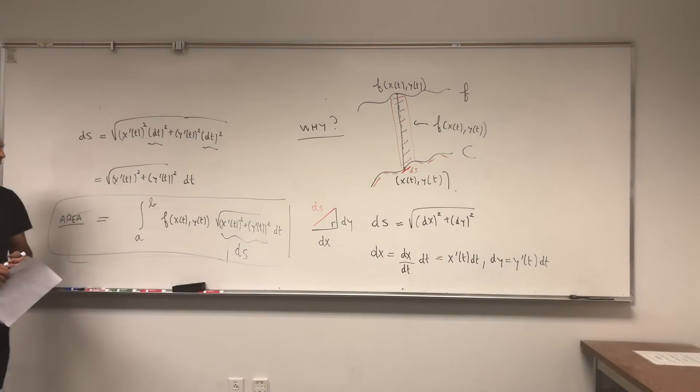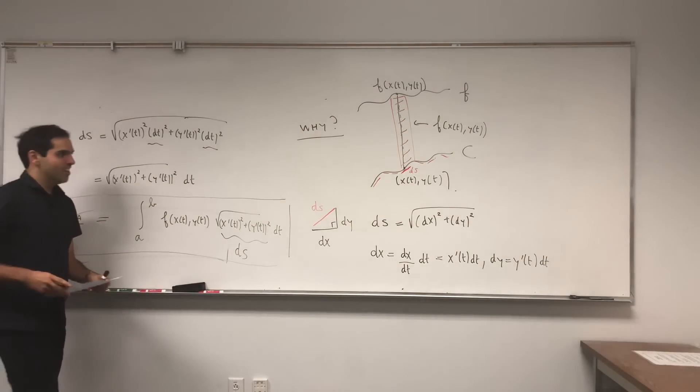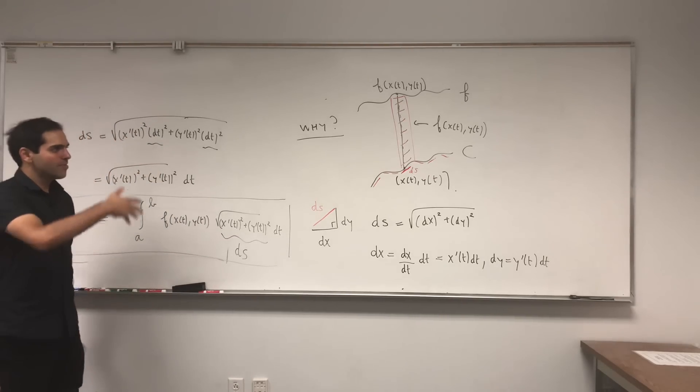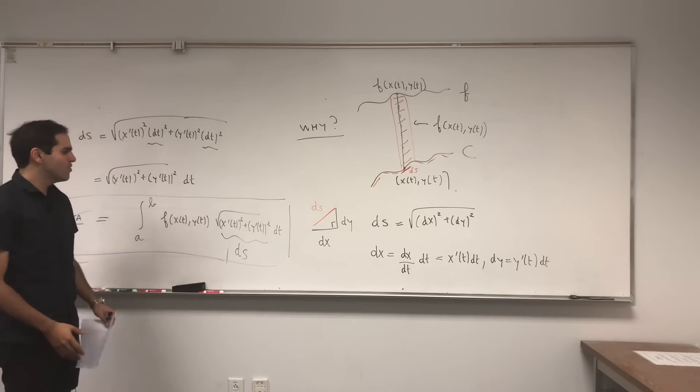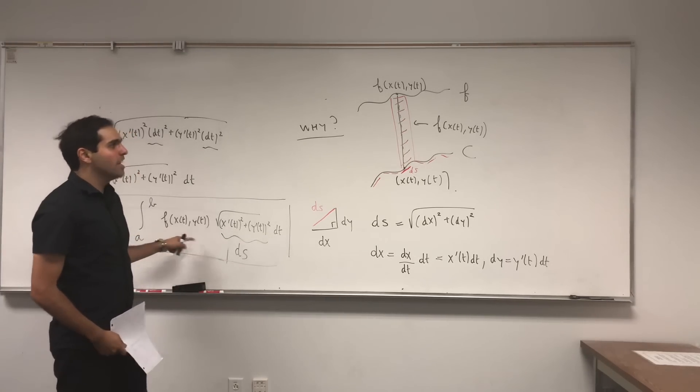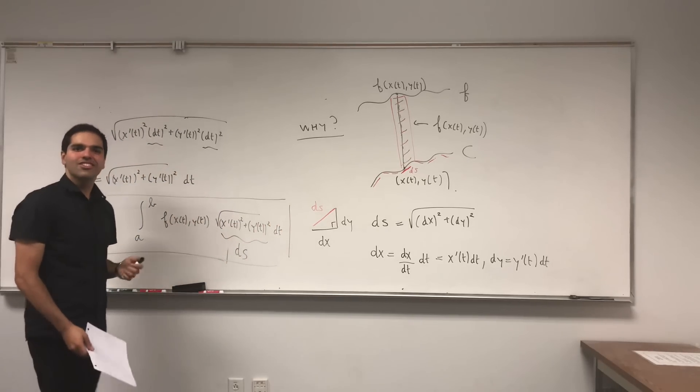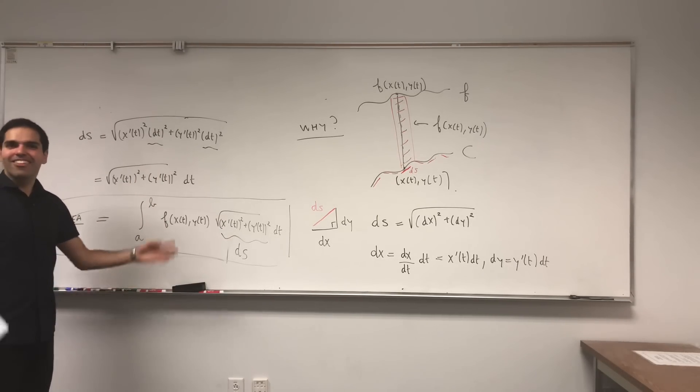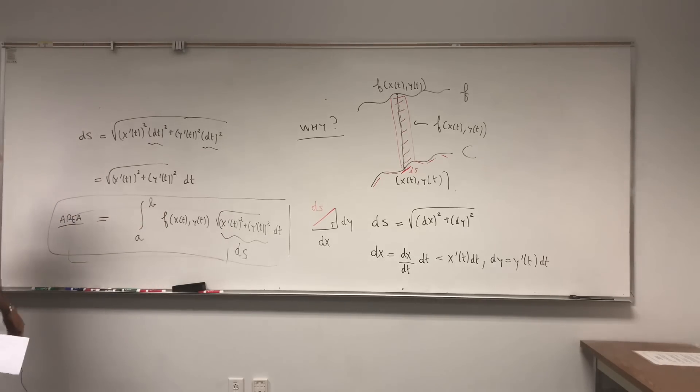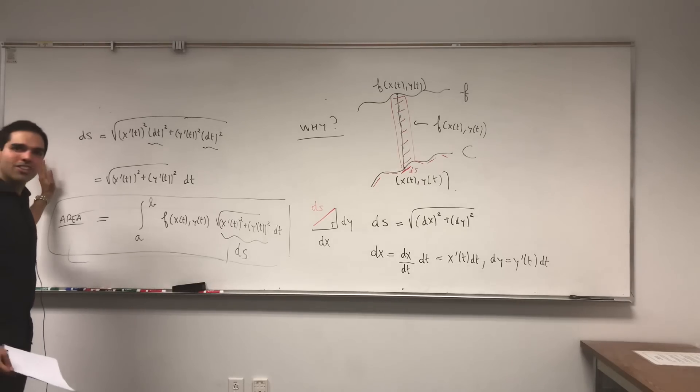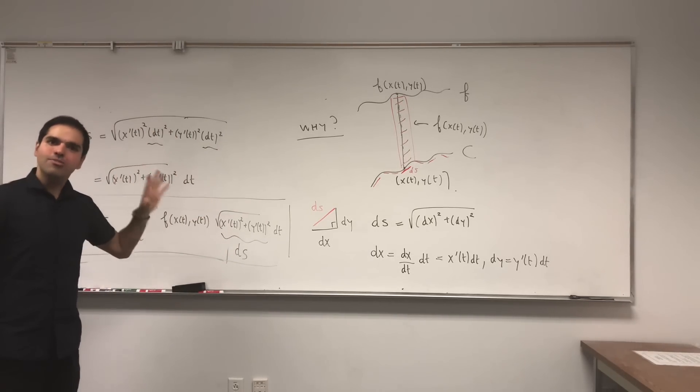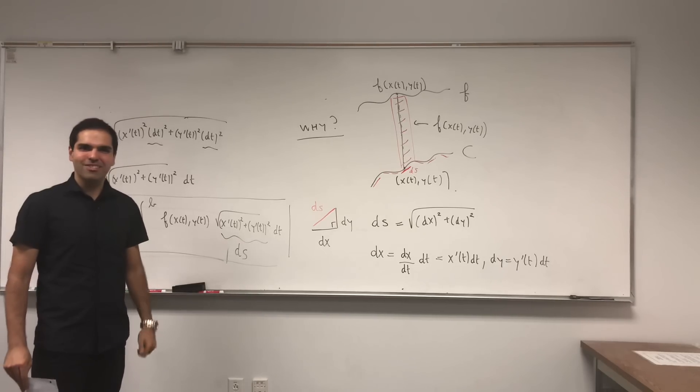Of course, there are other interpretations. It could be like the work done by f over the curve, or if f is one then it actually gives you the length of the curve, which is also neat, or if f is the density it gives you the mass of the wire, and other things I have no idea what they are. But again, the important thing is, and this is very recurrent in multivariable calculus, first you parametrize your curve and then you do stuff. So parametrization is always the first step in those problems.